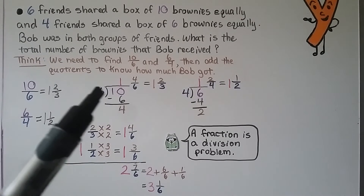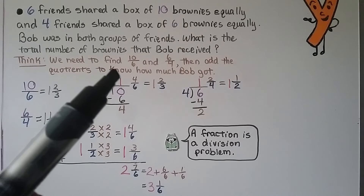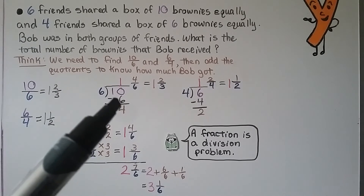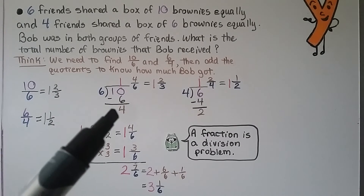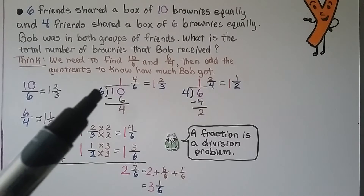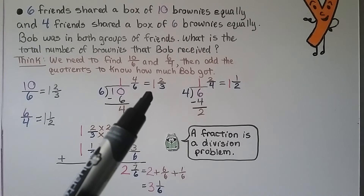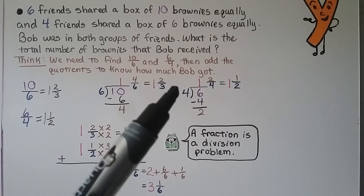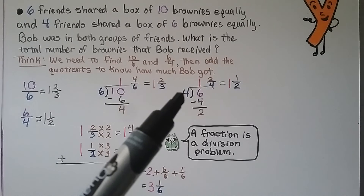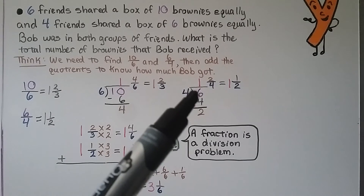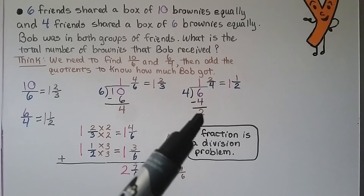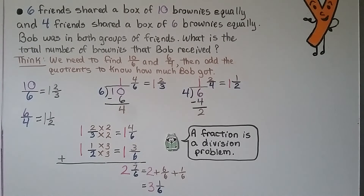For 10 divided by 6: 6 fits into 10 one time, 6 times 1 is 6, remainder is 4. That gives us 1 and 4 sixths, which simplifies to 1 and 2 thirds. Then for 6 divided by 4: 4 fits into 6 one time, 4 times 1 is 4, remainder is 2. We have 1 and 2 fourths, which simplifies to 1 and 1 half.